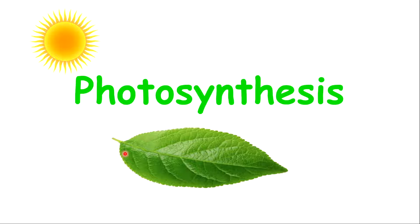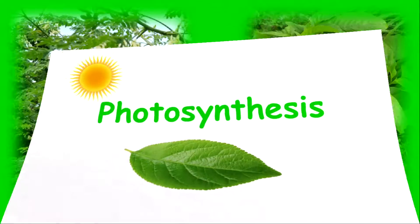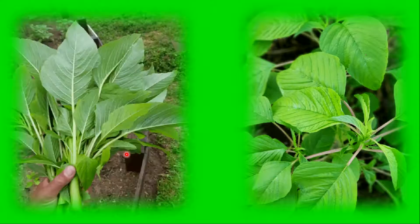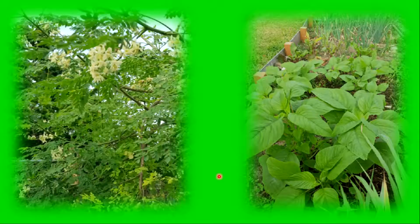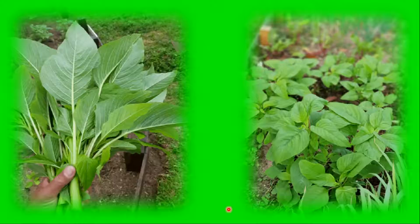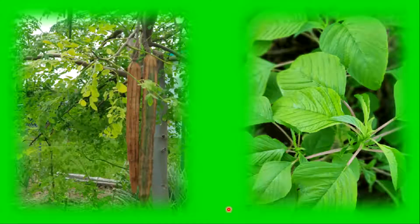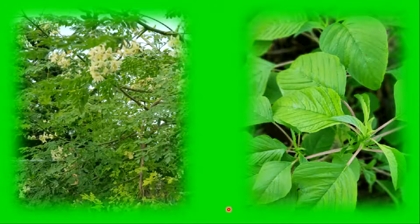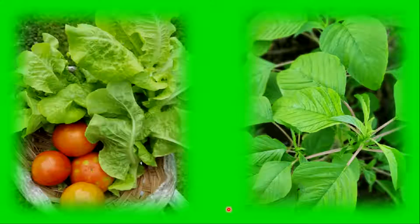Welcome back to another science learning series with Mr. Knight. Today we're going to look at photosynthesis. Photosynthesis is very important for plants to produce their food. It's also important to provide energy for food chains and the ecosystem, so all organisms in an ecosystem will depend on photosynthesis for their food, whether directly or indirectly.